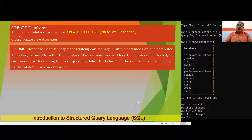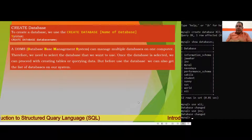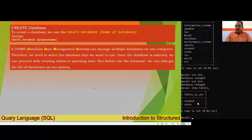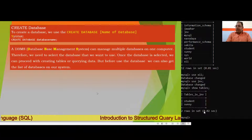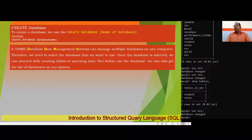When I write SHOW TABLES in the JNV database, two tables are shown: Student and Sunny. In the 12th database which I just created, I can also run SHOW TABLES to see whether any table exists in that particular database.